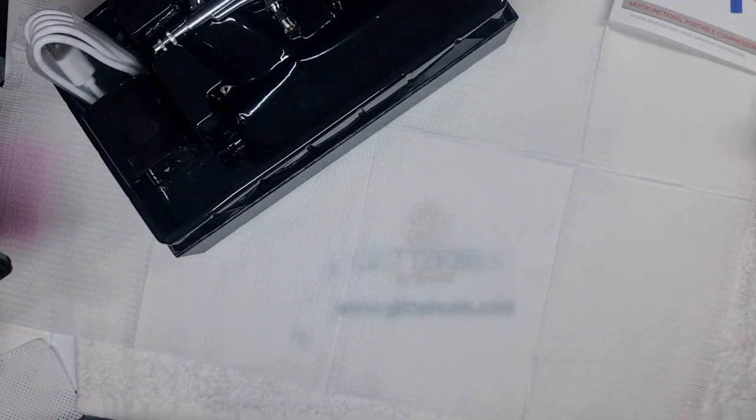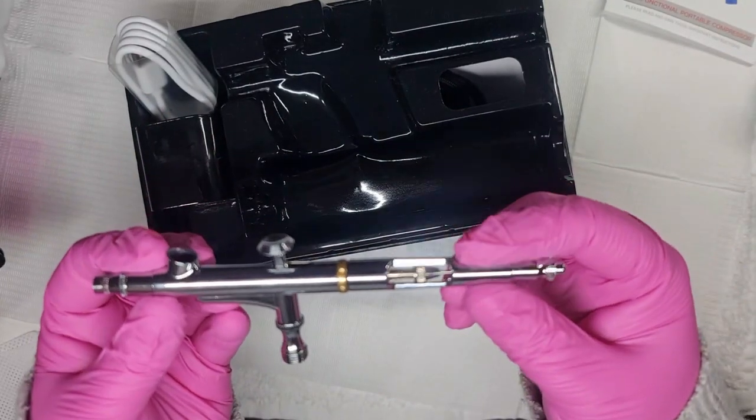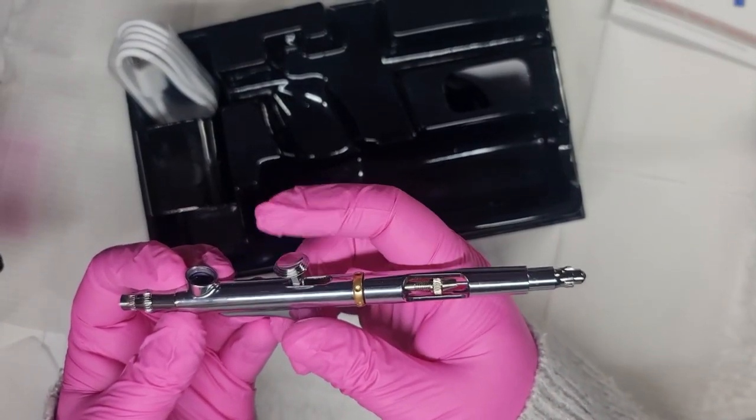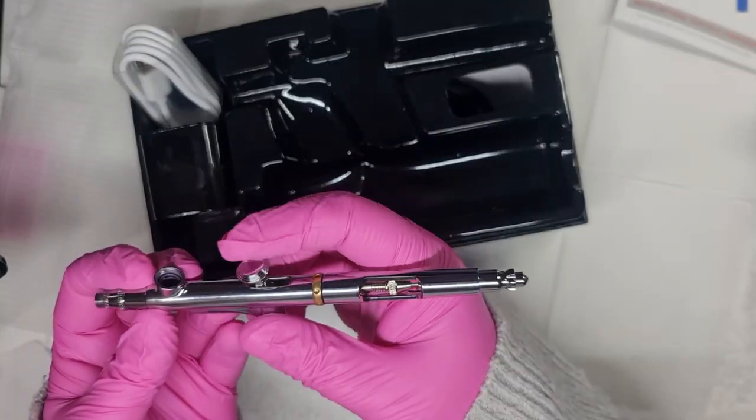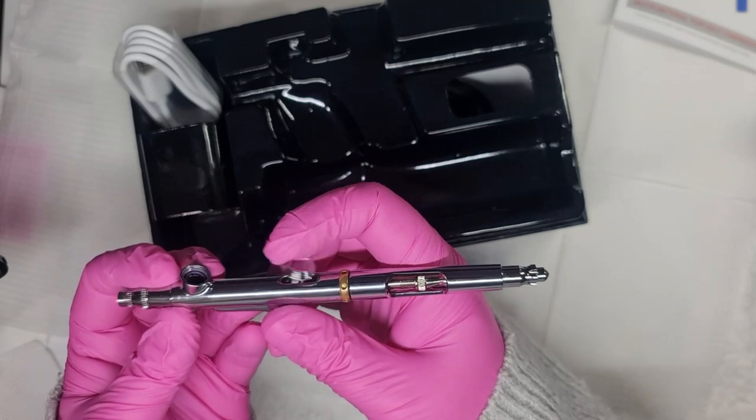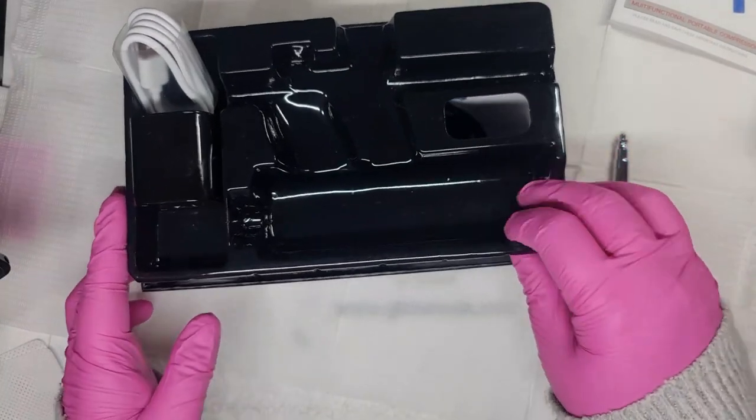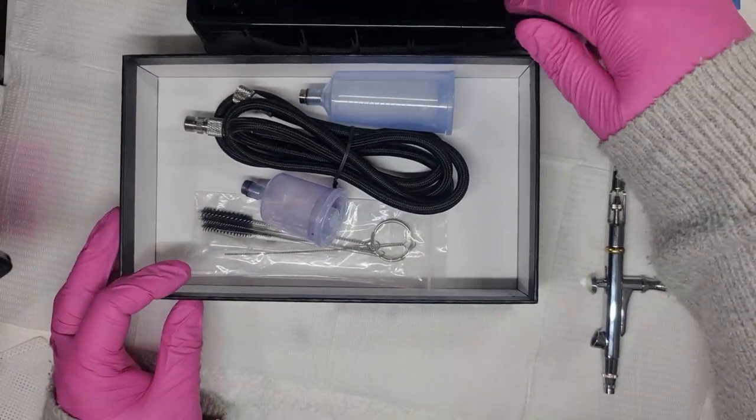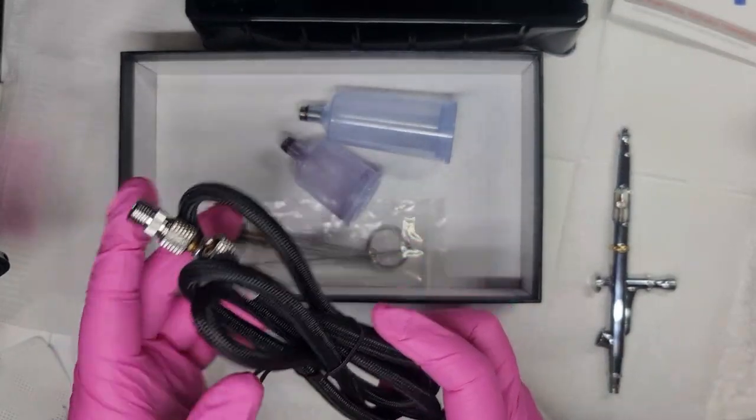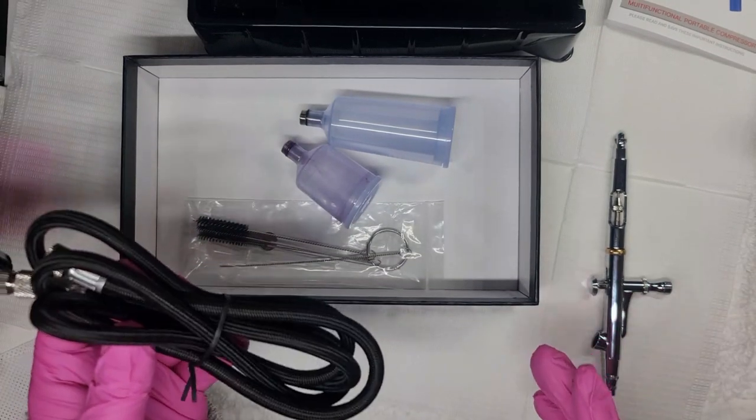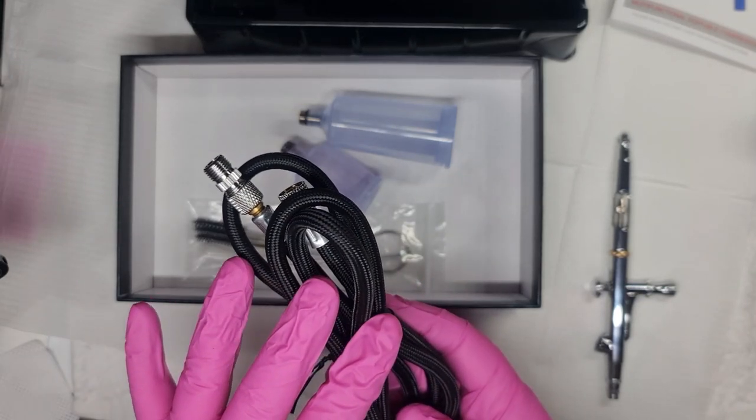Then you have your airbrush itself, which is very easy. This on the back controls your flow. On the top here you would put your little container. It also comes with this. Now this is really long, but because I'm going to be doing nails with it, I will not be using this part. But I think this is for like if you're cake decorating or doing makeup, airbrush makeup.